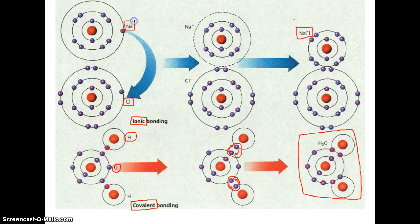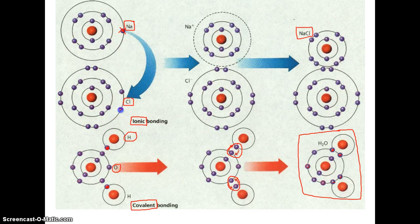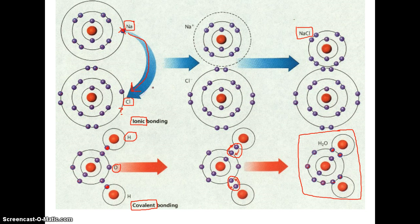If chlorine could just get an electron from somewhere, it would be happy because its outermost shell would have eight. So they don't want to share — that doesn't really help them. But sodium will just completely donate and give up its electron, and that will make sodium happy. And chlorine will happily take that electron in.